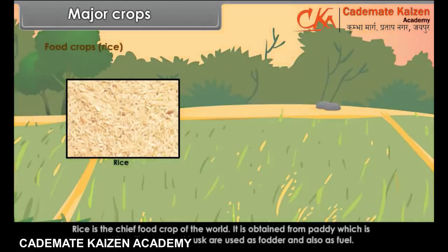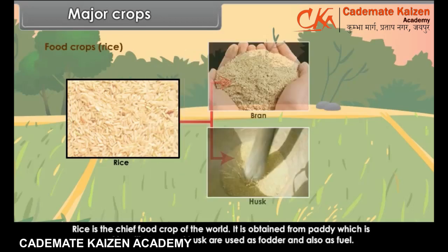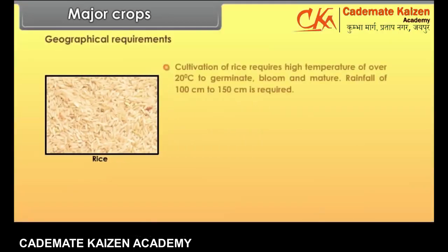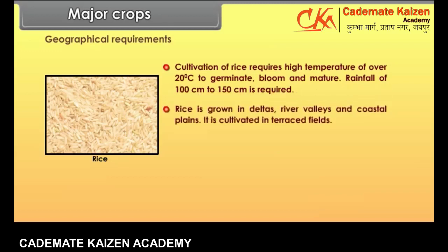Rice is the chief food crop of the world. It is obtained from paddy which is processed in mills. Bran and husk are used as fodder and also as fuel. Cultivation of rice requires high temperature of over 20 degrees Celsius to germinate, bloom and mature. Rainfall of 100 cm to 150 cm is required. Rice is grown in deltas, river valleys and coastal plains.